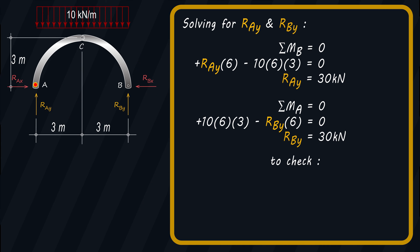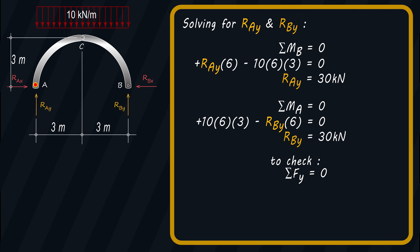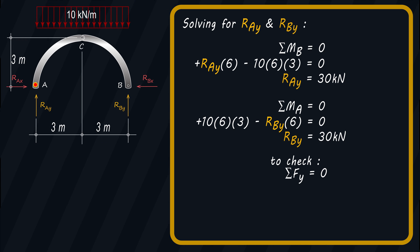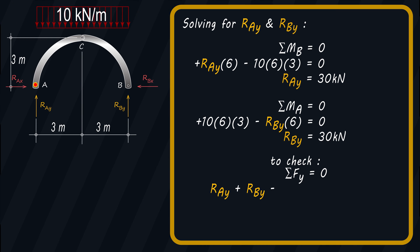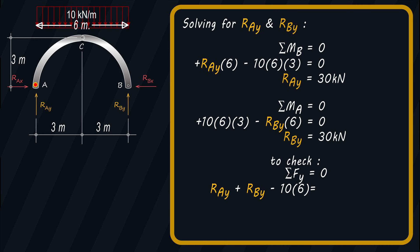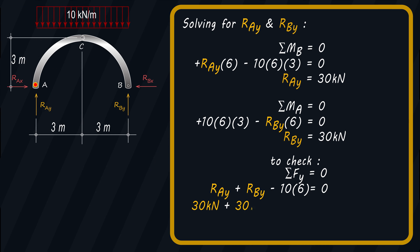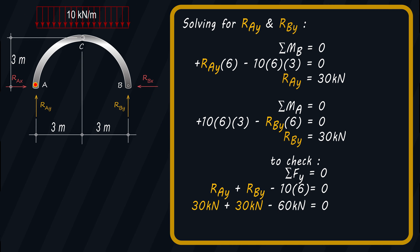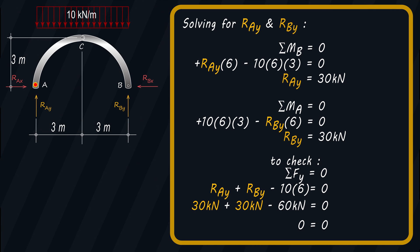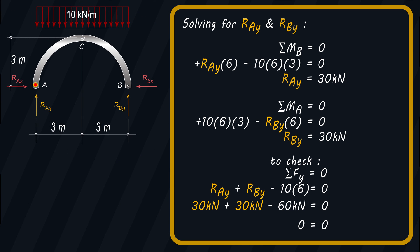To check, we'll use the summation of forces along Y, which should be equal to zero, taking upward forces as positive. We have RAY plus RBY minus 10 times 6 equals zero. Substituting the values we solved for RAY and RBY, we get zero. Zero is indeed equal to zero, therefore our answers for RAY and RBY are correct.